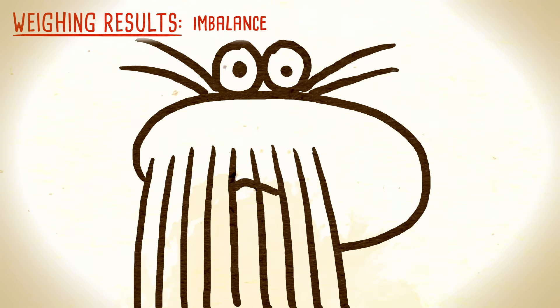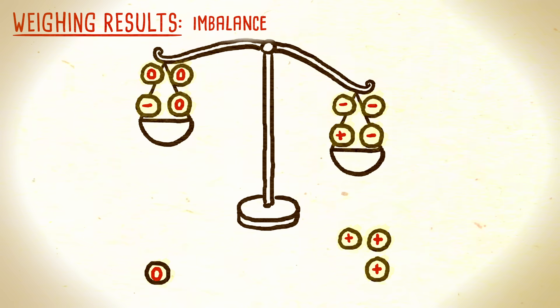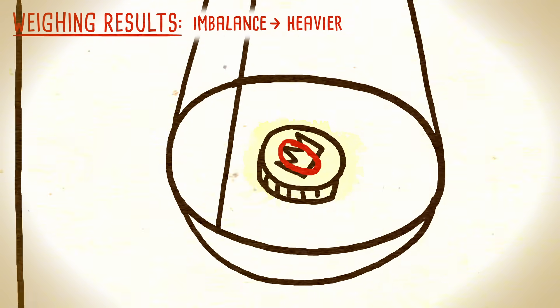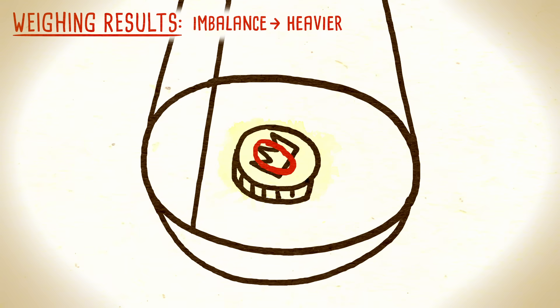From here, you have three possibilities. If the previously heavier side of the scale is still heavier, that means either the remaining plus coin on that side is actually the heavier one, or the remaining minus coin on the lighter side is actually the lighter one. Choose either one of them and weigh it against one of the regular coins to see which is true.